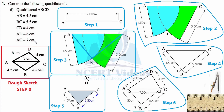Before constructing any part of the figure, it is best practice to first construct a rough sketch — that's why we have termed it as Step 0, the foremost initial step. In construction questions, we must have a pair of compasses and a ruler or straightedge. Note that we are not using a protractor in this exercise; all construction is done using only these two tools.